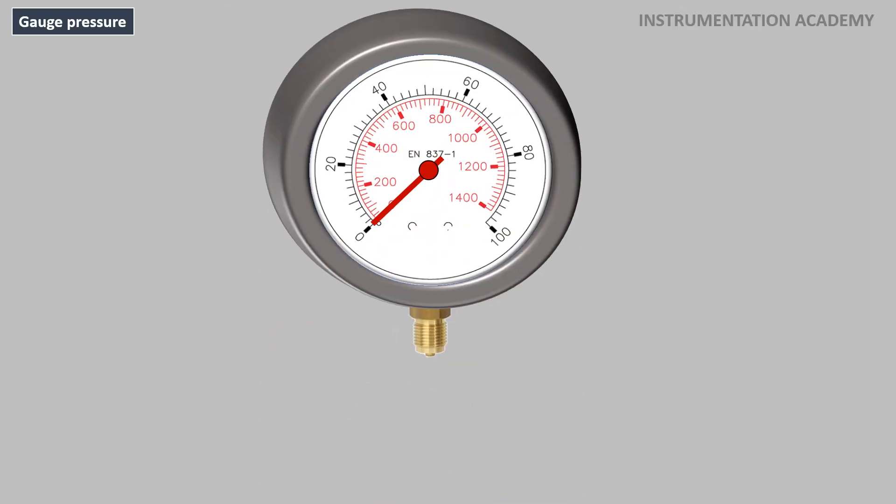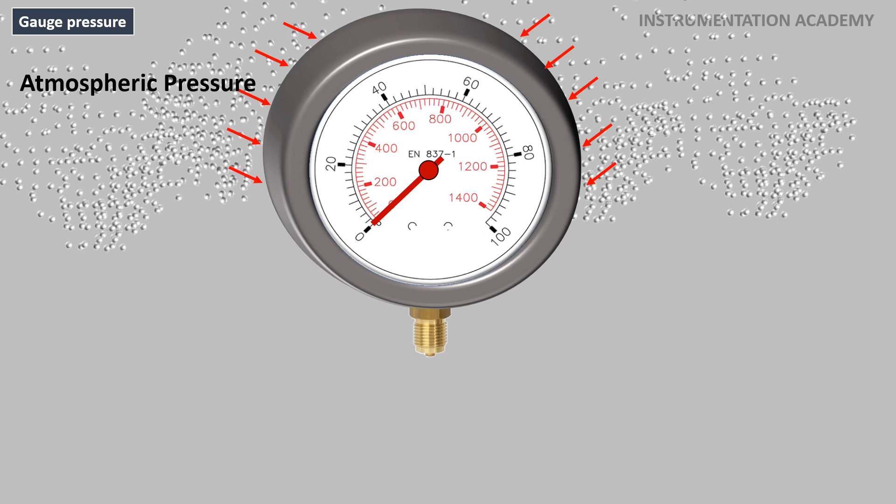Consider a normal pressure gauge. Before connecting the pressure gauge to any process, the reading in the gauge shows 0 psi. As we discussed earlier, every object on earth will undergo an atmospheric pressure. But that atmospheric pressure is not indicated in this gauge. That is because this pressure gauge is designed to indicate how much more the measured pressure is than the atmospheric pressure. That is here the atmospheric pressure is taken as the reference standard.